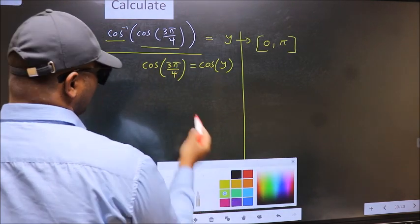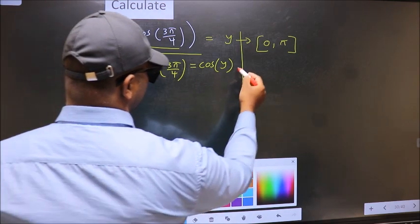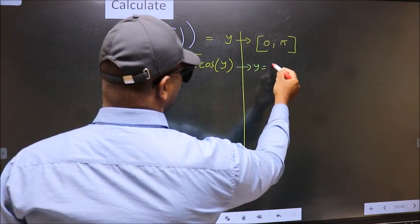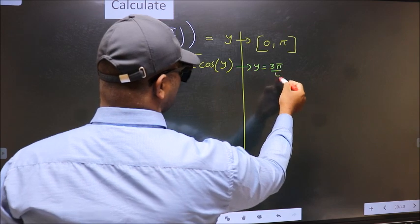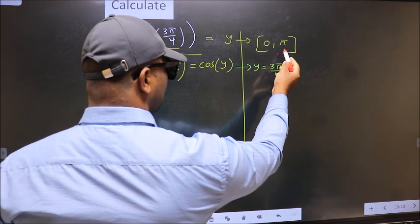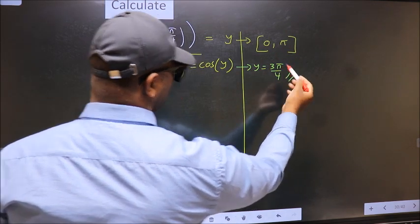Now, comparing both sides, we get y to be 3 pi by 4. Does this lie in this interval? Yes. So this is our answer.